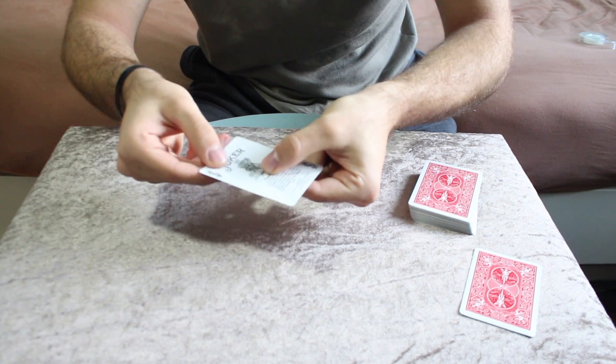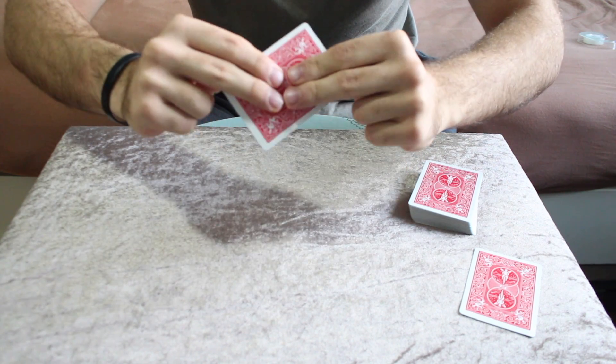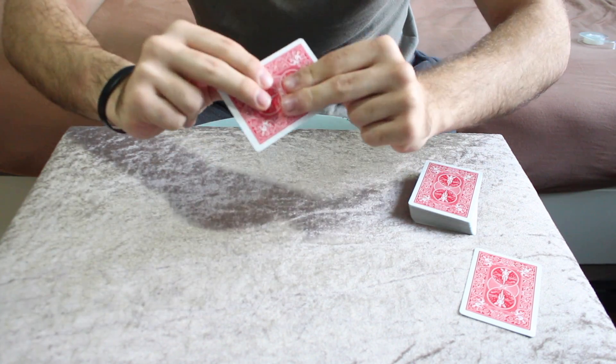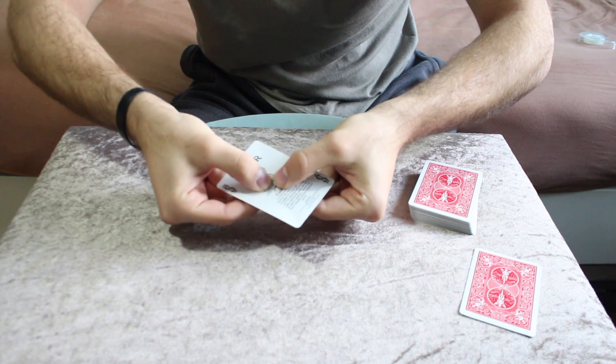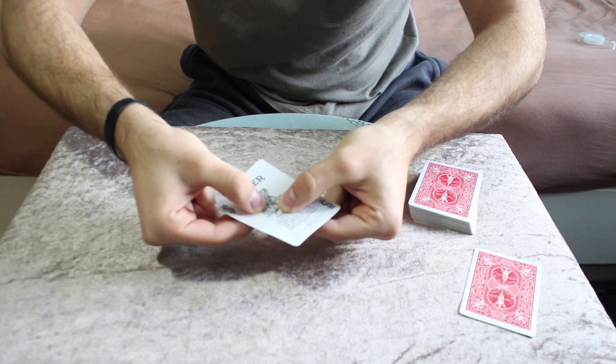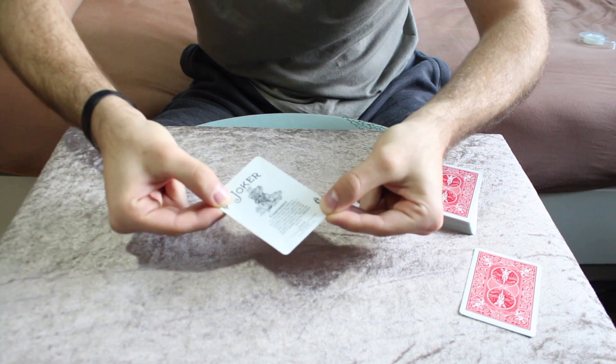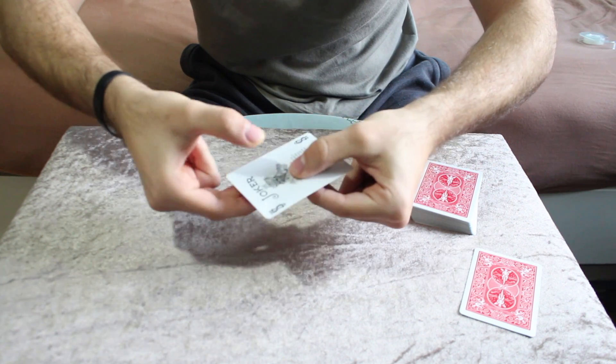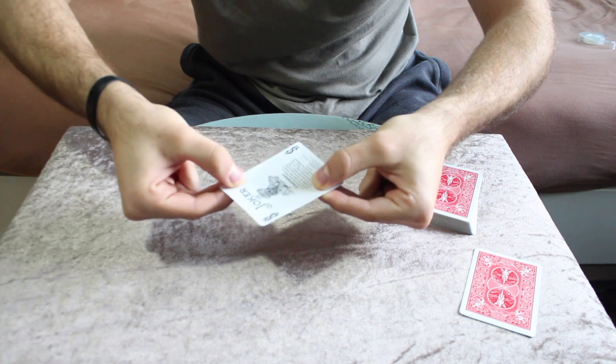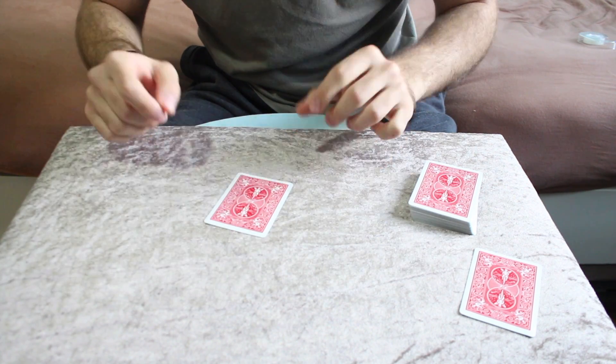So the thumb meets at the center and you do the exact same thing with the other hand. Notice the fingertips are at the center of the card. Now just apply a little bit of pressure with your thumb on the card and peel away from the center to the corners. And you repeat the same process with the other corners. So you go to the center, apply pressure and peel away. And that's how you do a breather crimp.